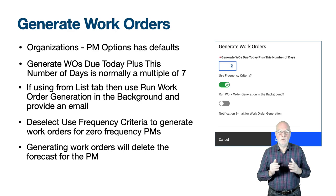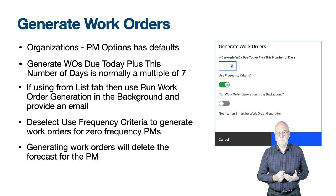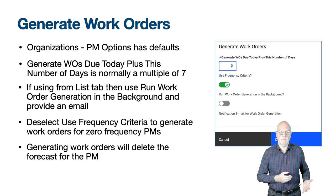When you generate work orders and the PM has a forecast, you will receive message BMXAT0231E: a forecast exists for this PM — generating a work order will delete the forecast. If you are using PM forecasts, you need to consider implementing both PM work order generation and PM forecast generation as background cron tasks. We will discuss PM forecasts in an upcoming video.